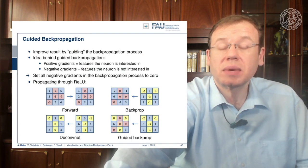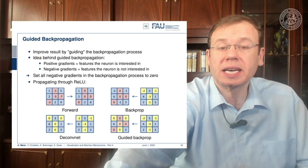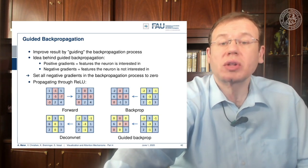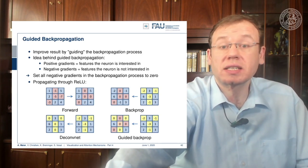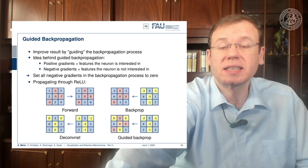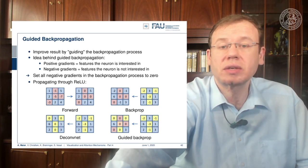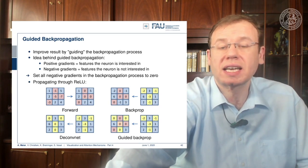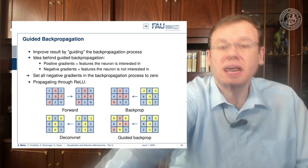In DeconvNet, you don't need to remember the switches from the forward pass, but you set all entries that are negative in the sensitivity to zero and propagate this way. Guided back propagation actually does both: it remembers the forward pass and sets those elements to zero, and it also sets all negative elements of the sensitivities to zero. So it is essentially a union of back propagation and DeconvNet in terms of cancelling negative values.